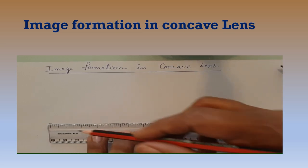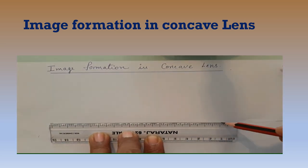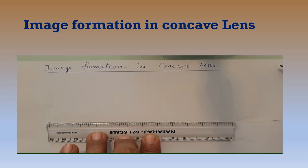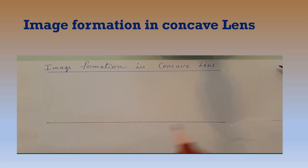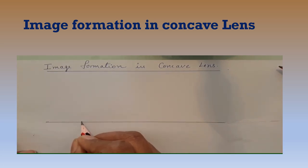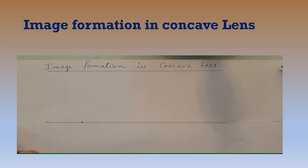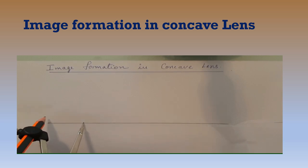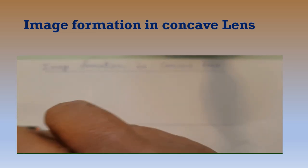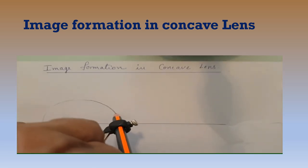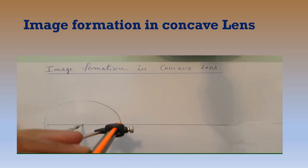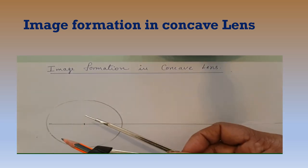First, we draw a straight line on the paper. This straight line will be the principal axis of our lens. On that line, we mark a point anywhere at one side, and fix the pin of the compass on that point. Then draw a circle of any radius you like.